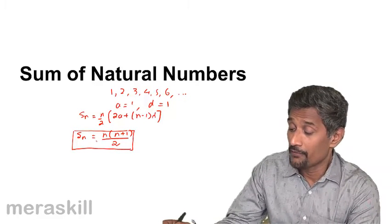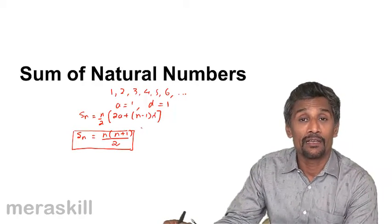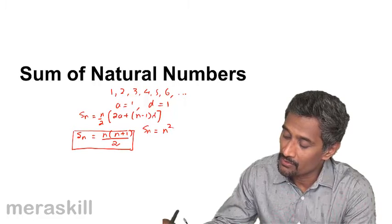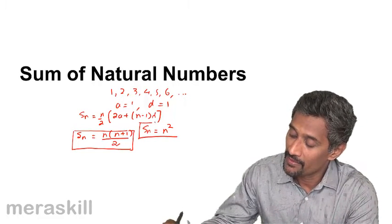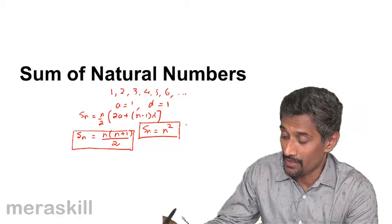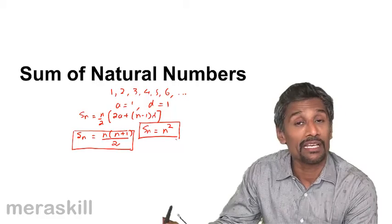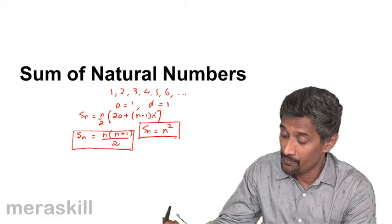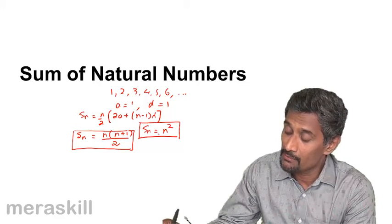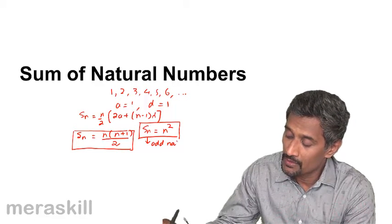Similarly, if you want to find the sum of the first n odd natural numbers, it is going to be SN which will turn out to be n squared. You take the same formula with a=1 and d=2, and hence accordingly you get n squared. So this way we can find the sum of n odd natural numbers.